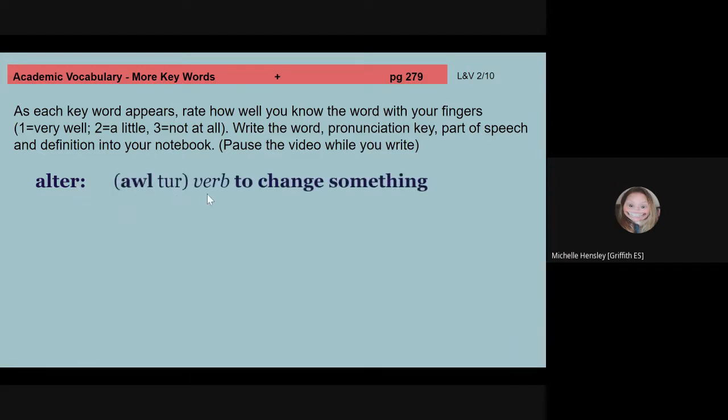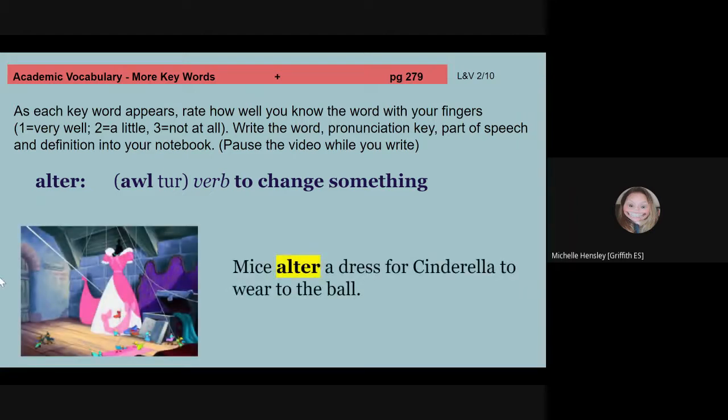Alter, two syllables, is a verb, and it means to change something. When you have an alternative, you have another choice. This is the verb part of that, alter, to change something, to give yourself another choice, to change something so that you have more than one choice. Alter. Mice alter a dress for Cinderella to wear to the ball. They change it. Alter. If you need more time with alter, go ahead and pause the video right here. Otherwise, we're going to move on to our next word.